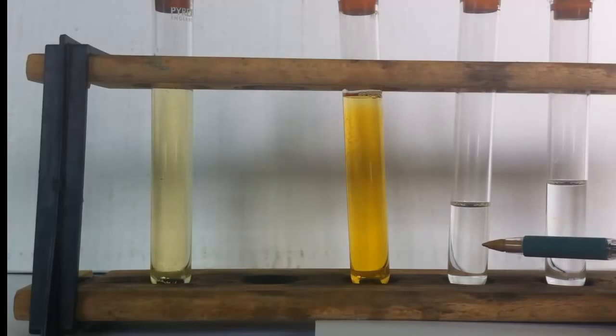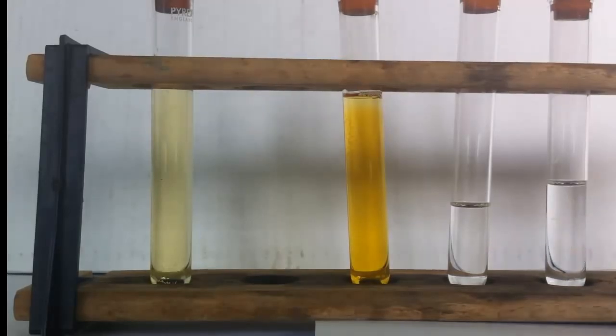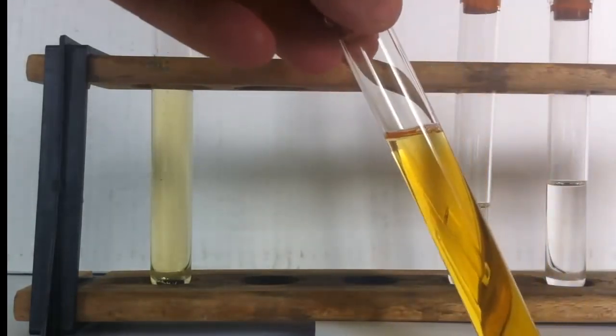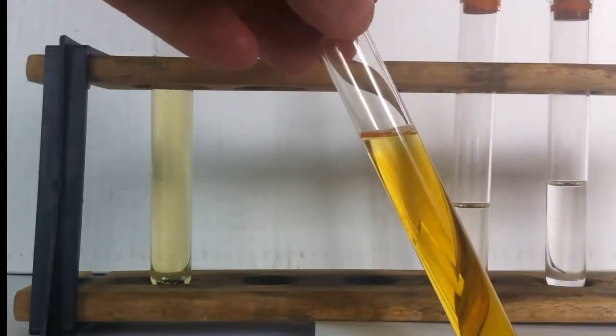So let's take a look at the positive test first of all for the presence of a carbon-carbon double bond. What I'm going to do is take some of this bromine water. Bromine water is poisonous so this experiment should be done in a fume cupboard.